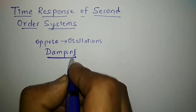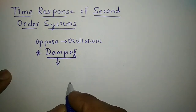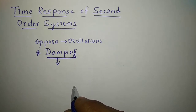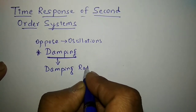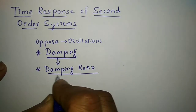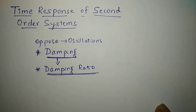We are interested in the terminology of damping. This damping is measured by a factor or ratio called the damping ratio. The damping ratio is denoted by a Greek symbol called Zeta. This factor explains how dominant the opposition from the system to the oscillations in the output is.